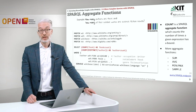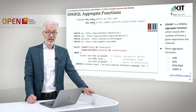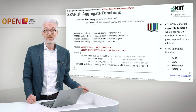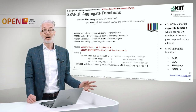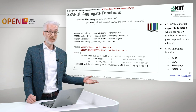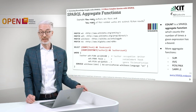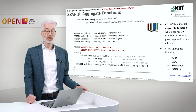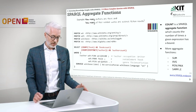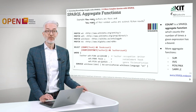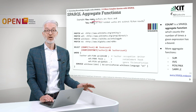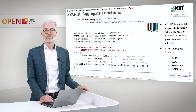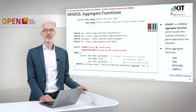Let's continue and go on to the next problem. The next thing we learn are so-called aggregate functions. Aggregate functions are functions like, for example, I want to count results and see how many lines are returned, or I have values that should be summed up over many result lines. This is the so-called aggregation function. The example I have for you is: how many authors are there and how many of their notable works are science fiction novels?